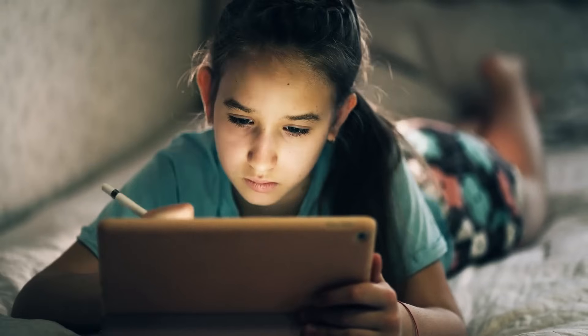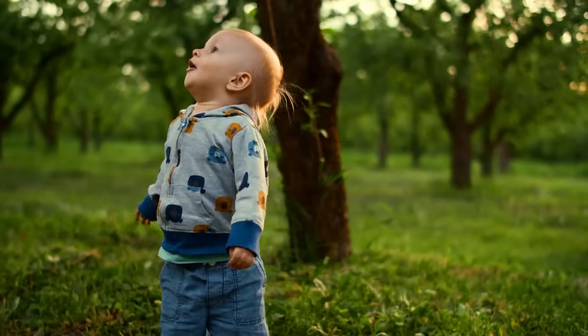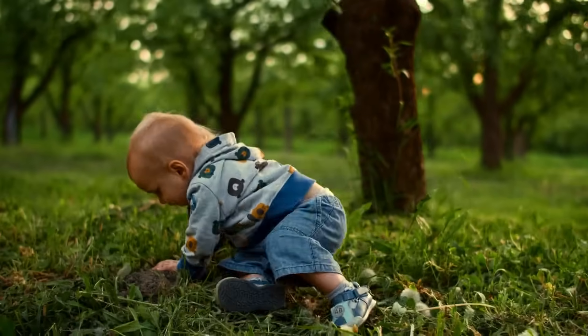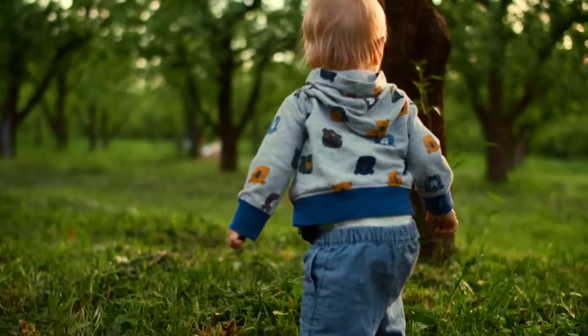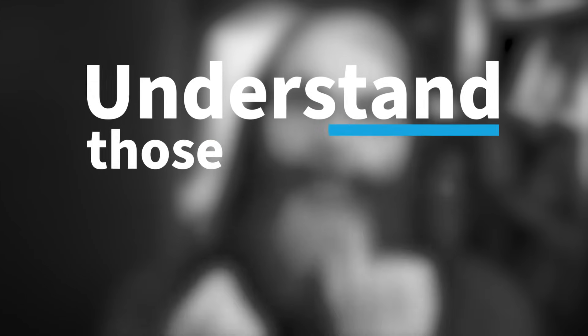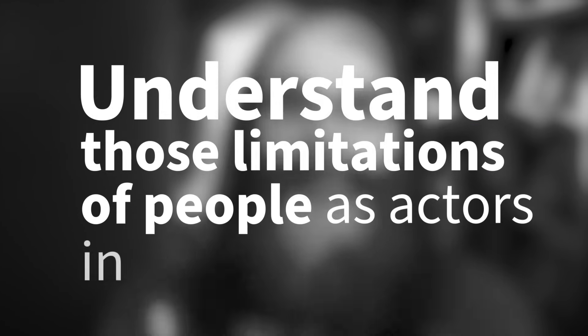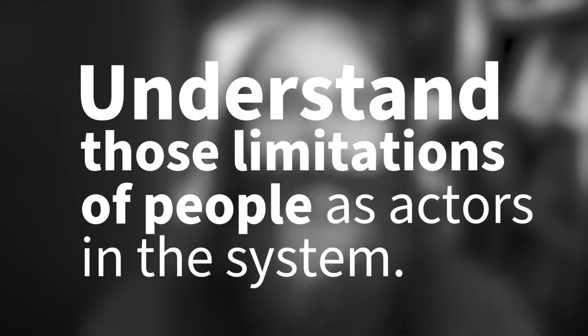We as humans have limits and constraints and ways that we fail — in the sense that we don't always do things in the perfect way — just like a piece of metal isn't. As a designer, your job is to understand those limitations of people as actors in the system and ensure the design of the system as a whole works even when those happen.